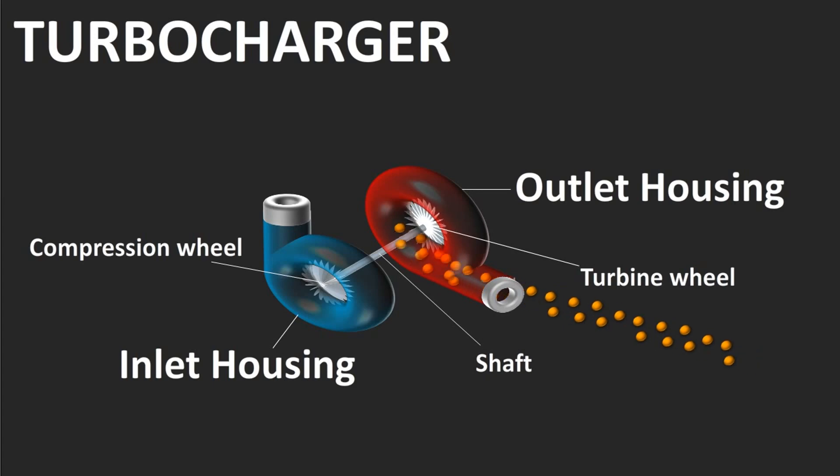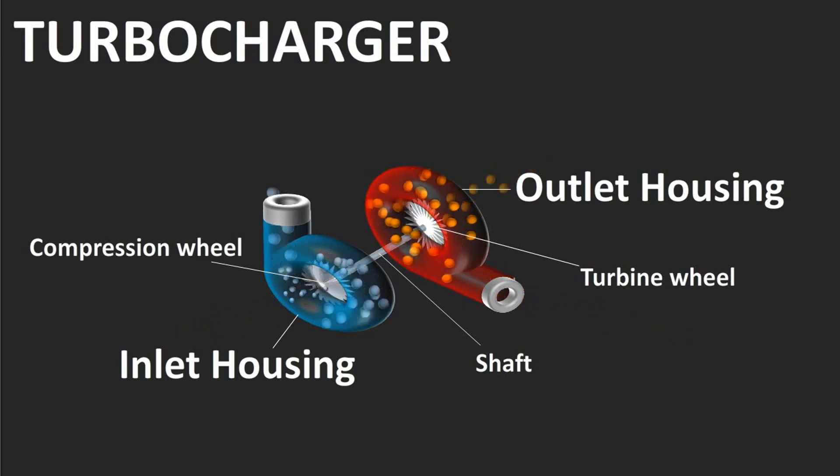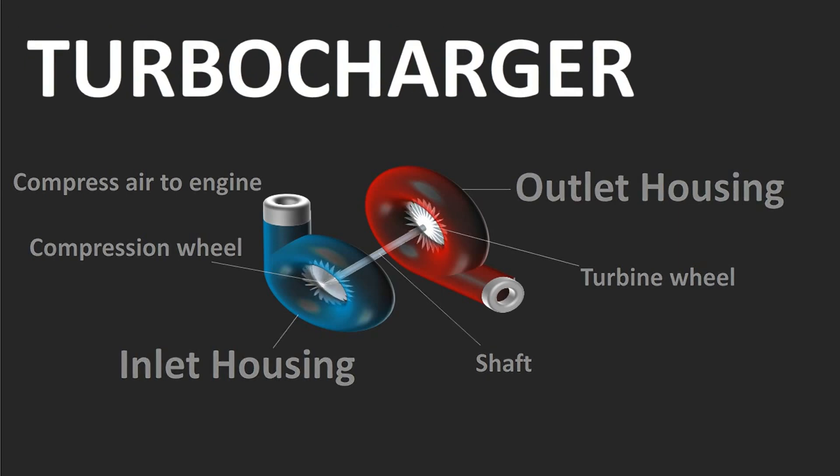As turbine wheel and compressor wheel are mounted on same shaft, as the turbine spins, the compressor blades also spin with it. So the air entering into the turbo from this side gets compressed due to the centrifugal forces and is forced out from the turbocharger into your engine from here. A simple but a marvelous machine.